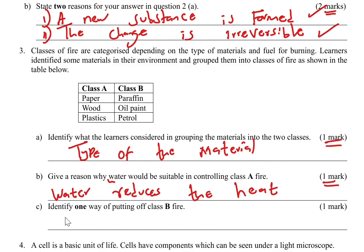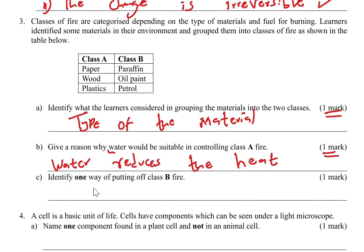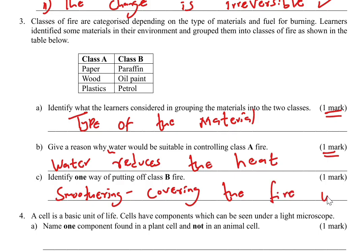Part C: identify one way of putting off Class B fire — fire caused by things like paraffin, oil paint, or petrol. We use smothering: covering the fire with things like a fire blanket, sand, or branches of a tree. Smothering cuts off oxygen from the fire. That is one way to put out Class B fire, and you score one mark.